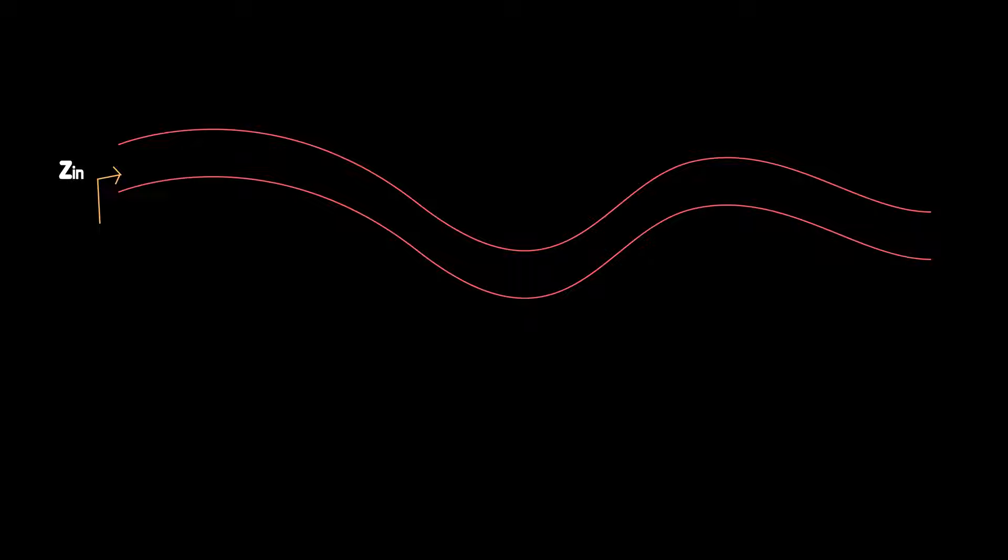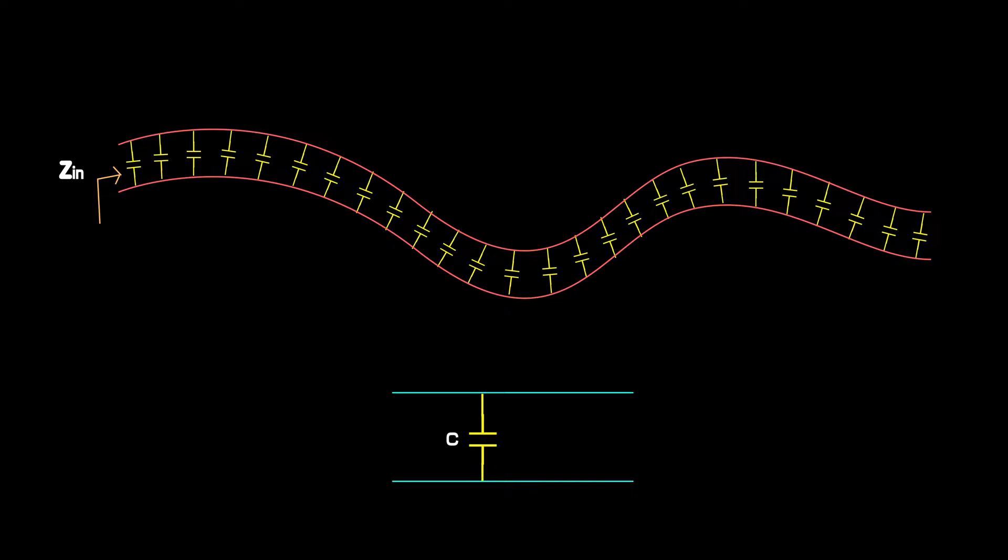Similarly, if we leave the other end open, the input impedance will look like a substantial shunt capacitor, two very big conductors separated by the dielectric. Due to the conductivity of the shields and the sea water, there is also a shunt conductance associated with the cable even when left open.